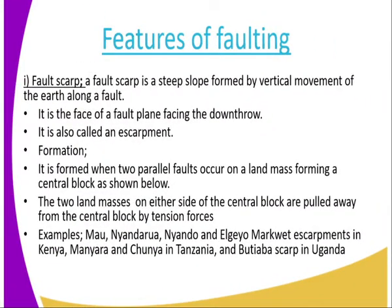We start by looking at the Fault Scarp. When we talk about the Fault Scarp, it is that steep slope formed by the vertical movement of the earth along a fault. It is the steep slope — the face of a fault facing the down-throw. So it is that face that is facing the down-throw. It is also referred to as an escarpment.